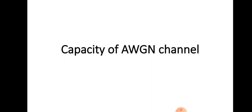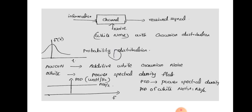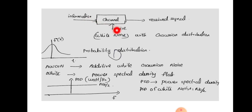Today we are going to discuss the capacity of the AWGN channel, a topic in the third module of the minor course Digital Communication for S4 students. The AWGN channel is represented by a channel with an information or input signal and noise added to it. The noise added during communication is a white noise with Gaussian distribution, and since it is added to the message signal, it is called Additive White Gaussian Noise.